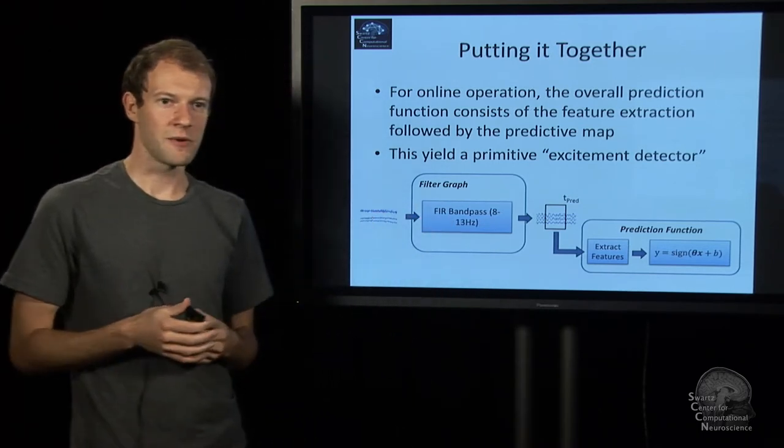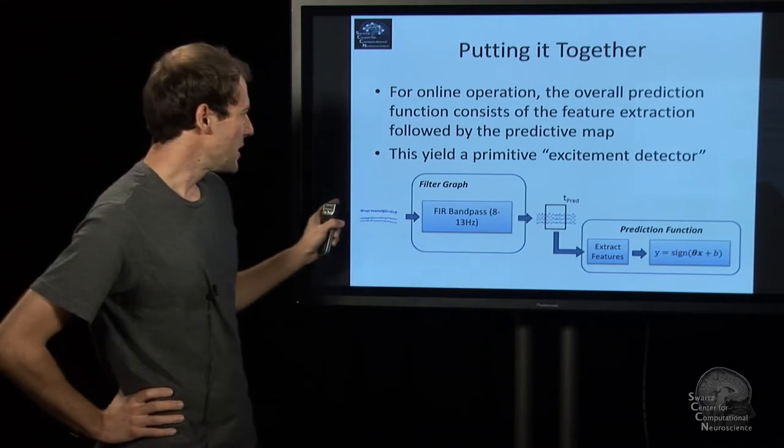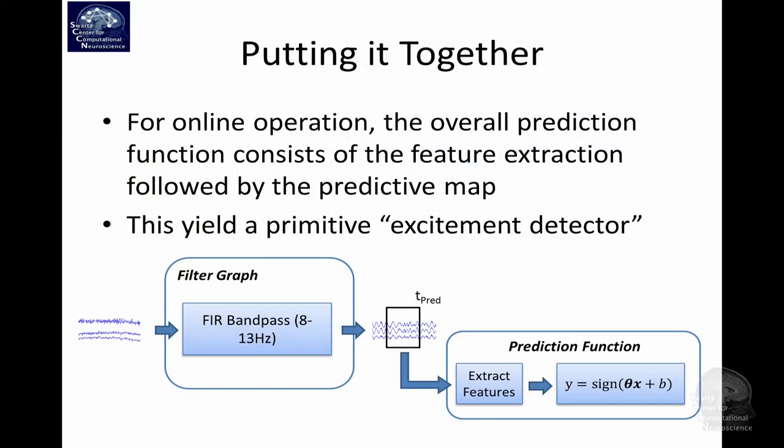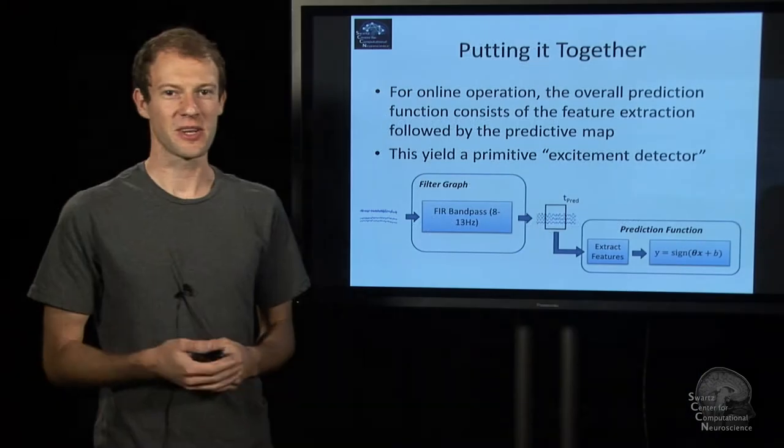When we're using this online, what we'll do is we implement, we take the signal, we apply the same band-pass filter online now, this is our filter graph. Then in a sliding window of the output, we do our feature extraction and we apply the predictive mapping here that we just described to the features. That gives you either plus one or minus one, depending whether the person saw an exciting or non-exciting picture. You can view this as a very basic excitement detector. This basically can be implemented online and would work if you were lucky, if it is indeed easy enough to recognize this from one channel.